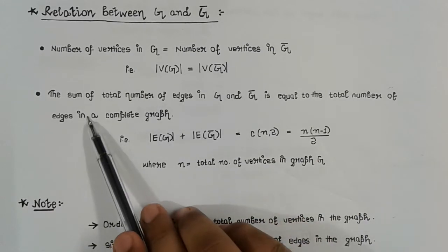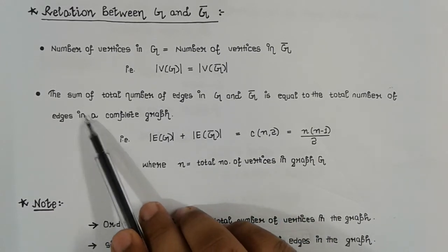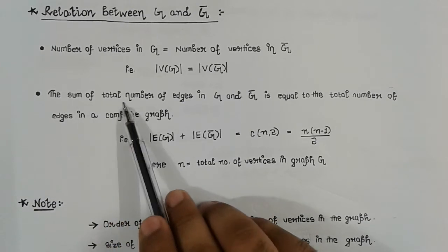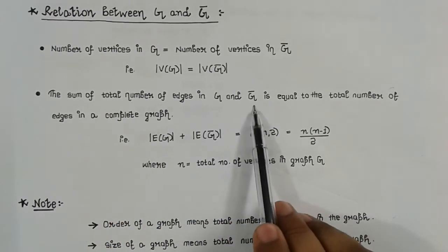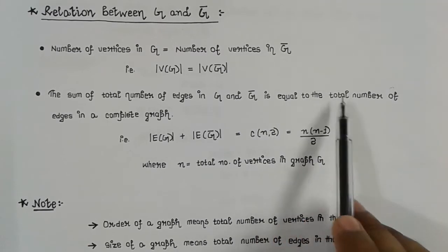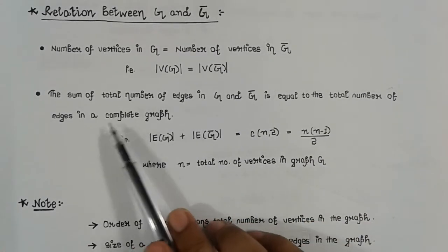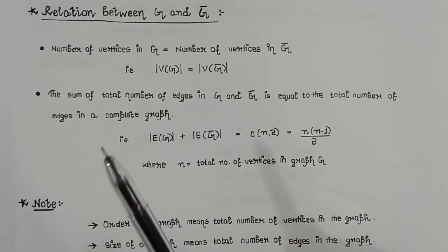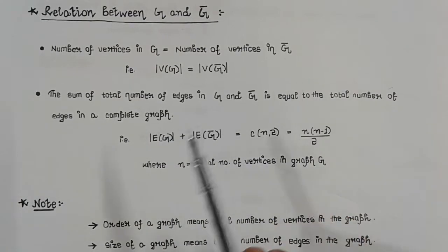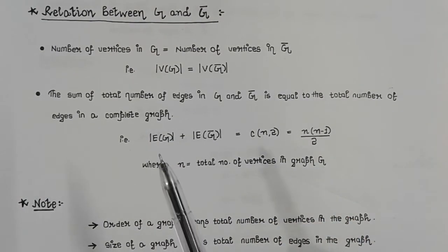The next relation is between the number of edges in the two graphs, which states: the sum of the total number of edges in G and G-bar is equal to the total number of edges in a complete graph. A complete graph is a graph in which every pair of vertices is connected by exactly one edge.